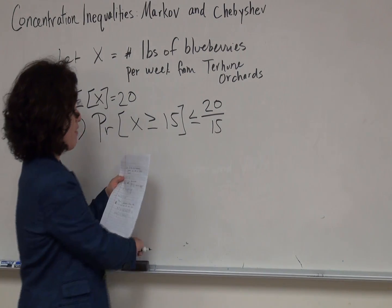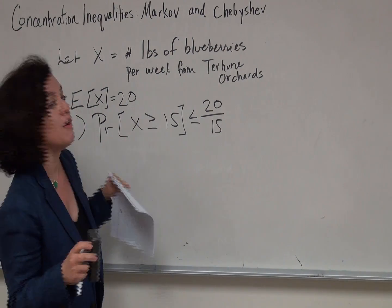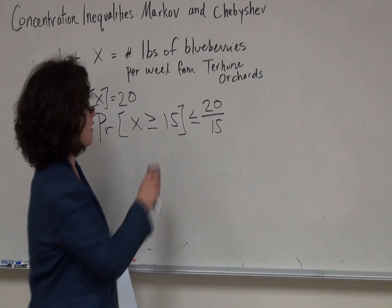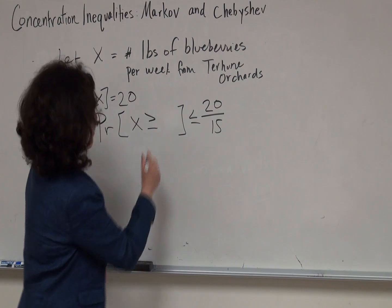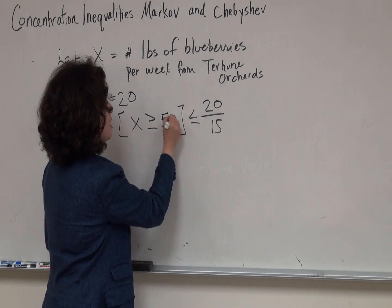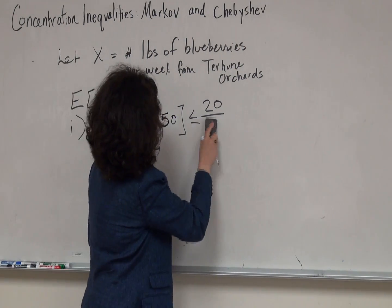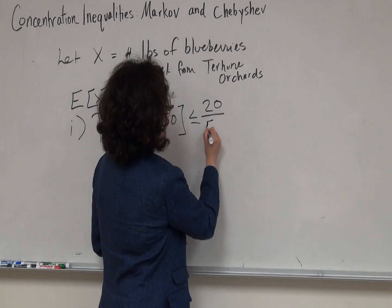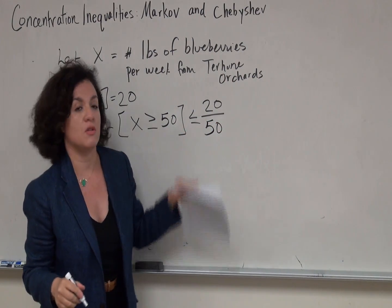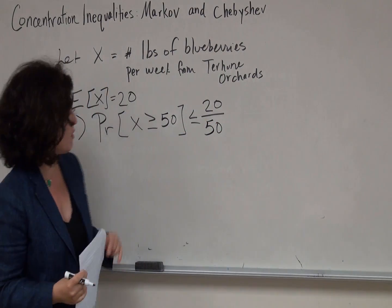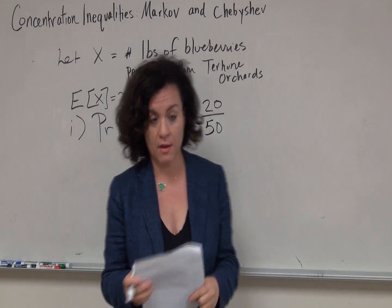Instead, what if the question asked about producing greater than 50 pounds of blueberries this week? Here our constant is 50, and when we divide 20 by 50 we get that the probability is at most 2/5 — so there's at most a 2/5 chance they'll produce more than 50 pounds in a week.